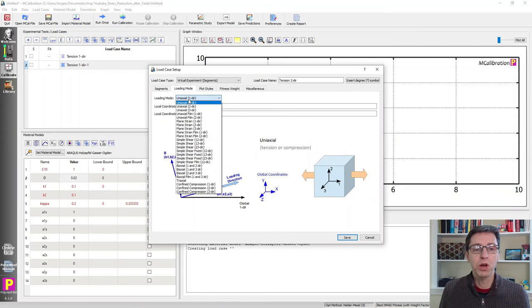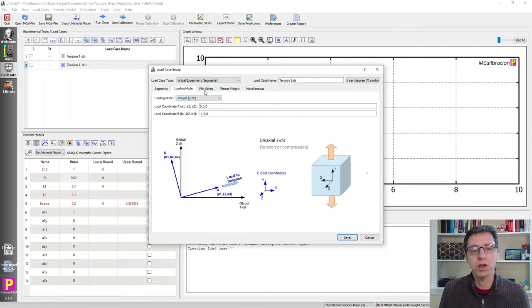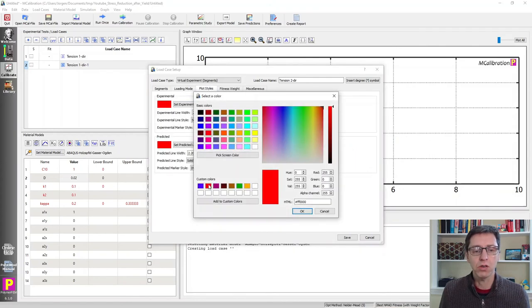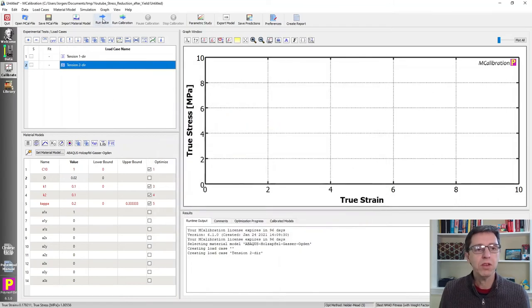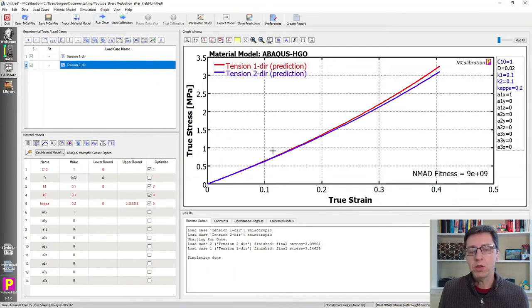We can keep the definition of our segment. But I have to switch the loading mode now to tension in the two direction. I want to change the color so we can see the different colors. I'll make it blue. If I run this now once, we get two lines.